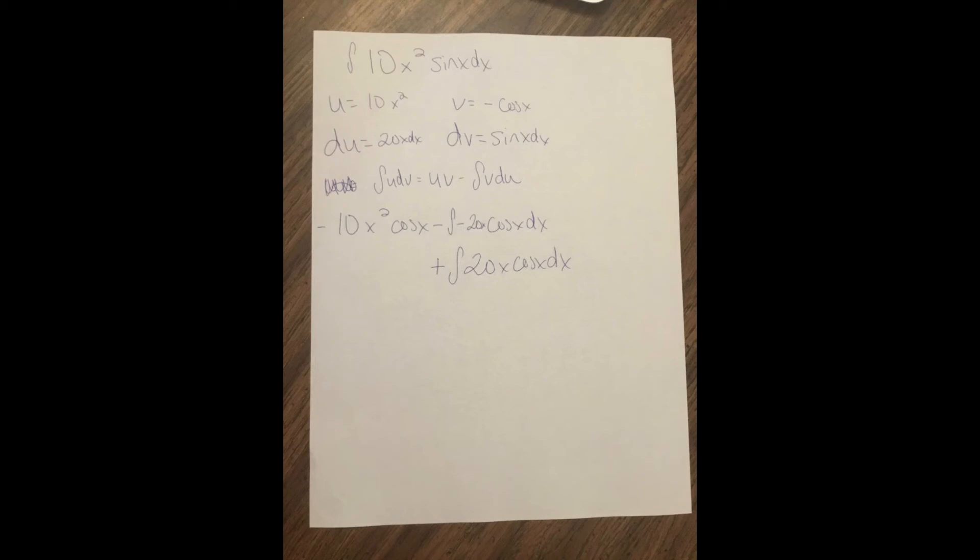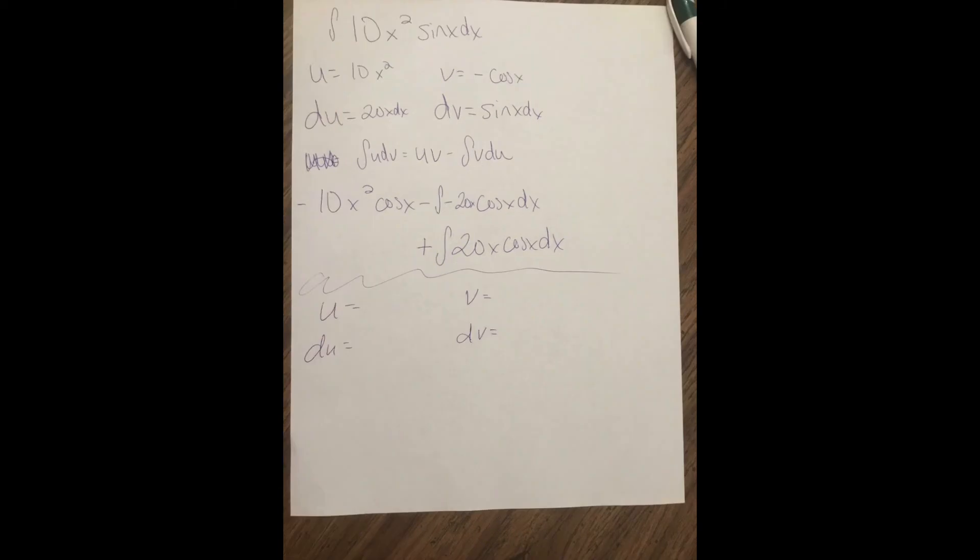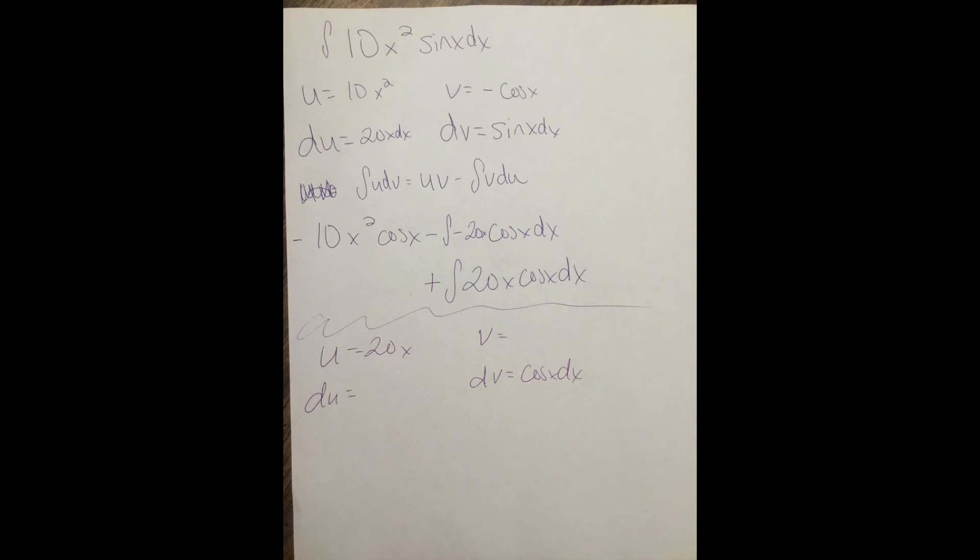Now notice, when we have the minus integral of v du, we can't actually do that antiderivative. We're going to have to just go back and do integration by parts again. I don't like using different variables just to keep track of this problem. You're just going to have to keep it organized. I did change colors.